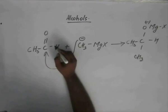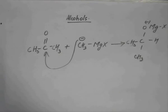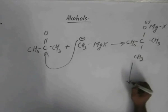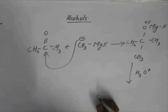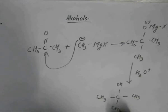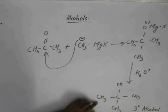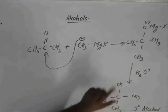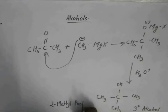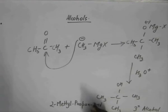Changing the substrate to a ketone — acetone in particular — when we hydrolyze this, we are left with CH3C(OH)(CH3)CH3, a tertiary alcohol. In this case, the product is 2-methylpropan-2-ol, which is a tertiary alcohol.